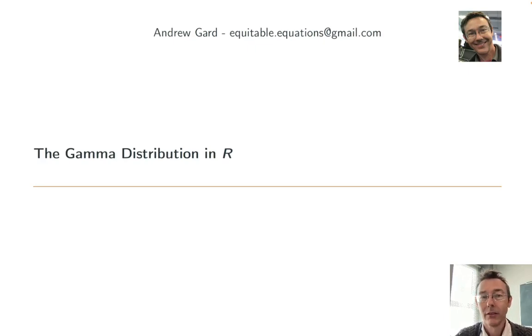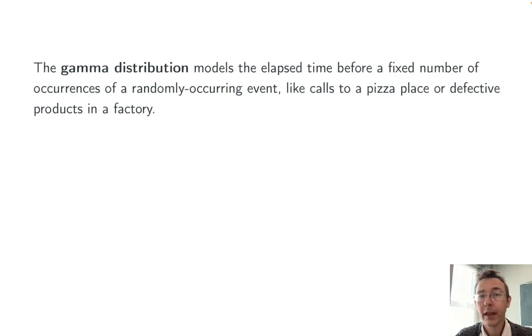Hey everybody. Today we're talking about the gamma distribution in R. Remember the gamma distribution models the time that elapses before a fixed number of occurrences of some randomly occurring event, like calls to a pizza place or defective products in a factory.